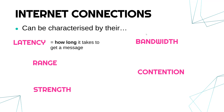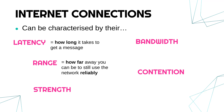Latency of a network refers to how long it takes to get a message. Low latency is good — if you have low latency it means there is less delay in getting a response back. High latency means networks seem slow. The range of a network refers to how far away you can be and still use the network reliably. A bigger range means you can be further away and still use the network. As you get further away from a wifi router it becomes less reliable and slower. Bigger range is generally a good thing, although there is a slight security risk if it's too big.